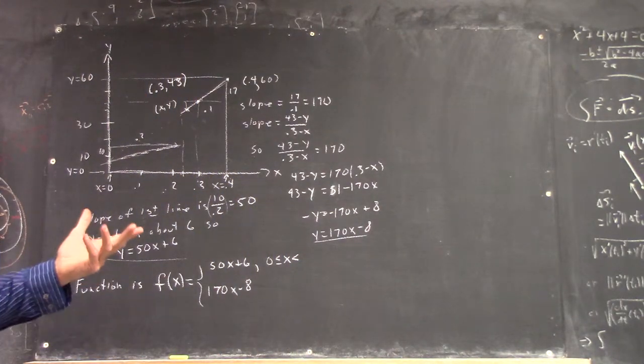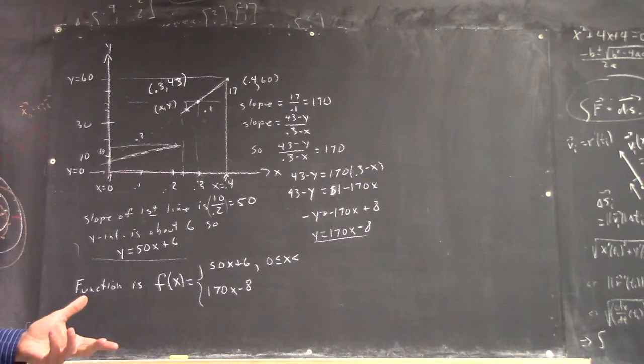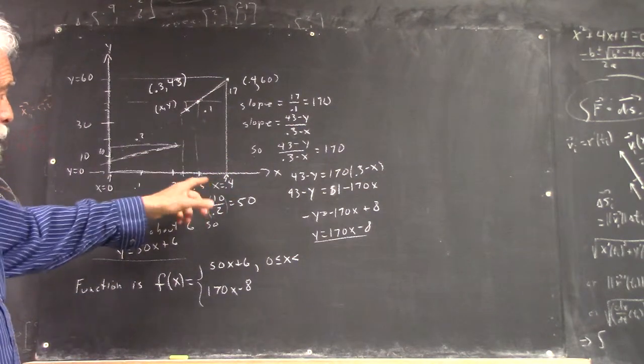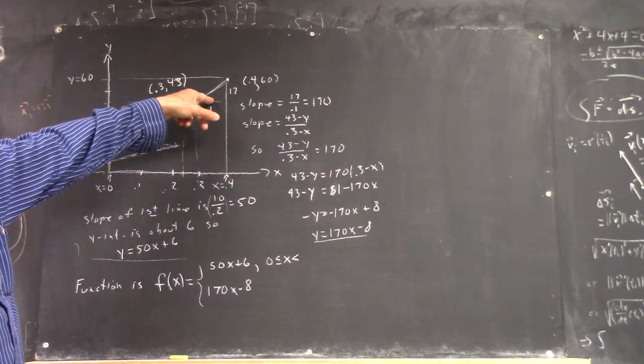What do you think? Zero to 4, well, it doesn't work because by the time we get to 0.4 we're up to here, right?